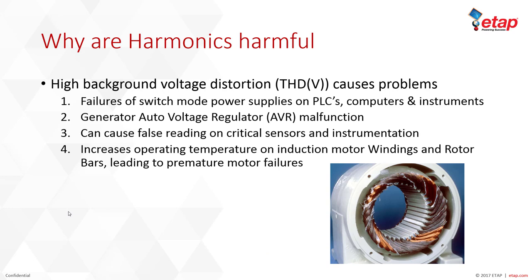High background voltage distortion, or total harmonic distortion voltage, also causes problems. It can cause failures of switch mode power supplies, PLCs, computers, and instruments. If you have PLCs or power supplies that are burning up, it may be a good idea to perform a harmonics study. Generator automatic voltage regulators can malfunction with serious voltage distortions. It can also cause false readings on critical sensors and instrumentation, and increase operating temperature on induction motor windings and rotor bars, leading to premature motor failures.